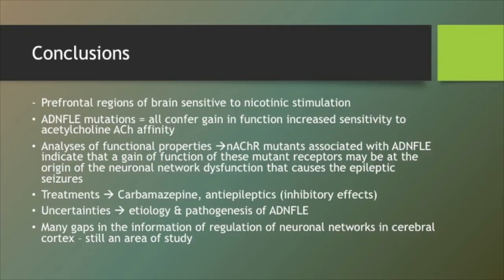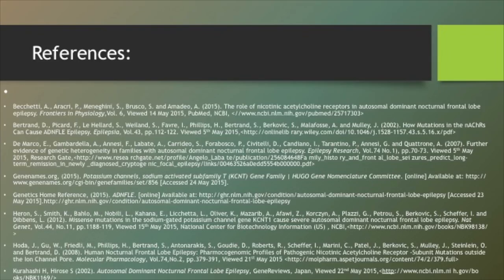There are uncertainties in the pathogenesis of autosomal dominant nocturnal frontal lobe epilepsy. There are many gaps in our understanding of information and regulation of neuronal networks in the cerebral cortex, and this remains a big area of study.